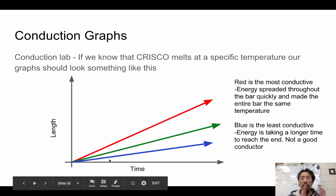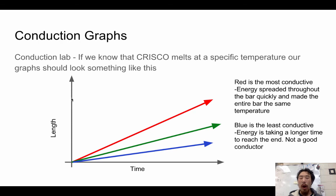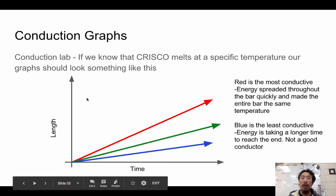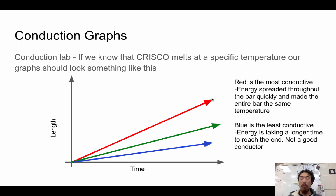Looking at length versus time: the longer it takes for the material to heat up, the more insulating it is. The blue curve takes much longer to reach the maximum length point compared to the red curve, which reaches it rapidly — showing the red material is a good conductor, able to be heated up quickly.